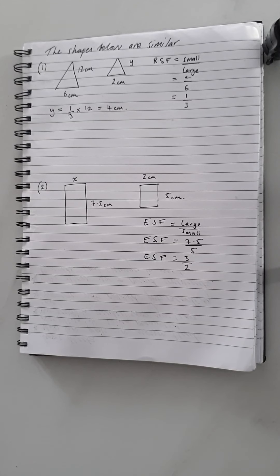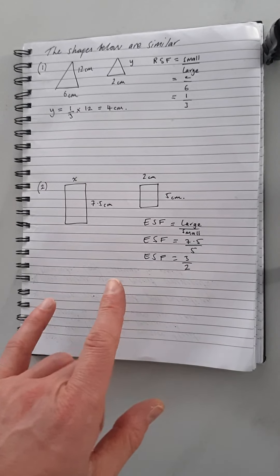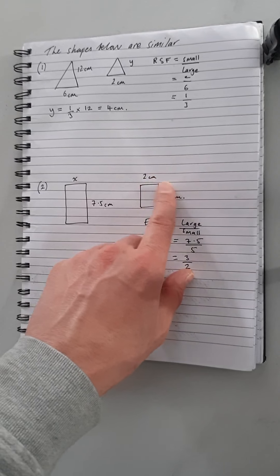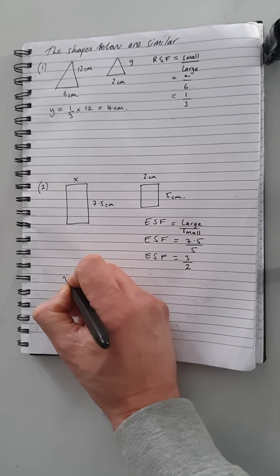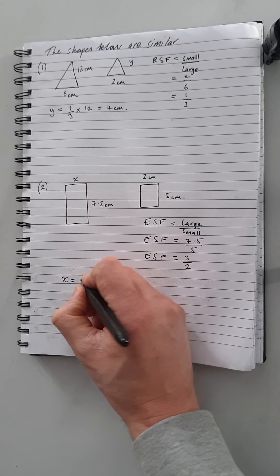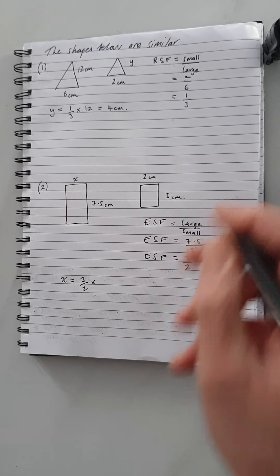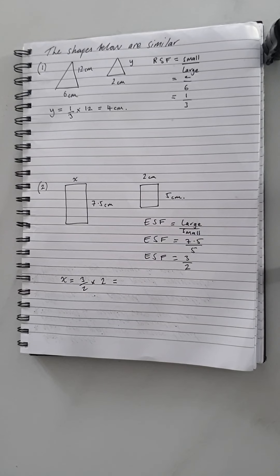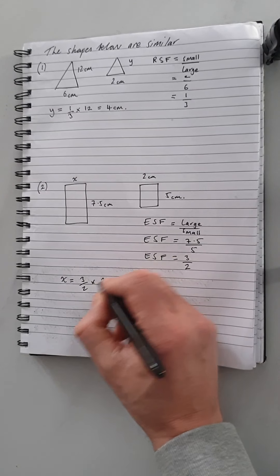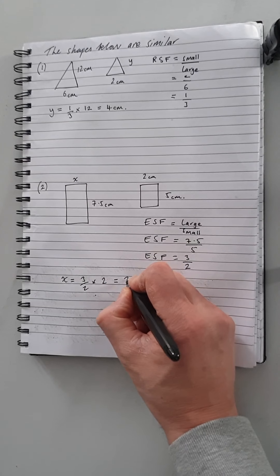Now we apply the enlargement scale factor. We have the breadth of the smaller rectangle and want the breadth of the bigger rectangle. So: x = ESF × smaller breadth = 3/2 × 2. Multiplying by a fraction — 3/2 of 2 means divide by the bottom (2 ÷ 2 = 1) then multiply by the top (1 × 3 = 3). So x = 3.